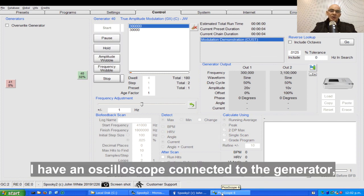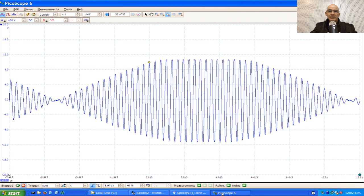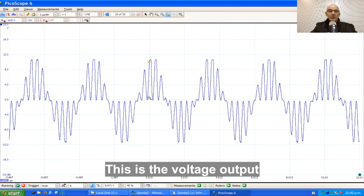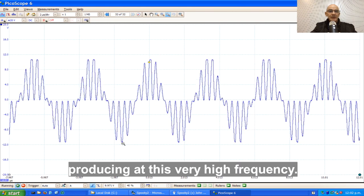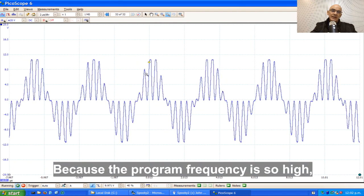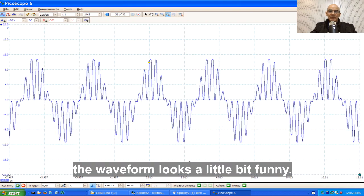I have an oscilloscope connected to the Generator so we can see the outputs. This is the voltage output that the Generator is producing at this very high frequency. Because the program frequency is so high, the waveform looks a little bit funny.